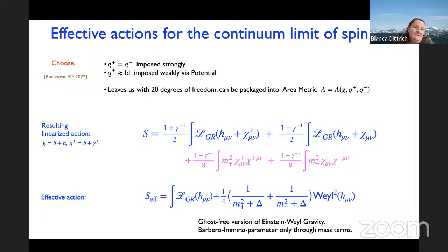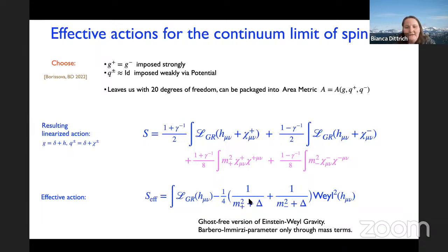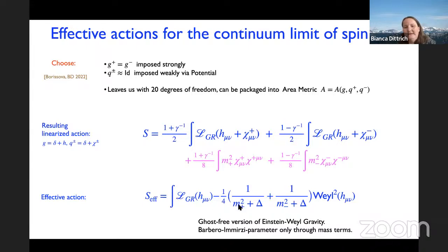What we choose is which simplicity constraints to impose sharply and which weakly. We want to reproduce the effective action from the area Regge calculus with the area metric as a free variable. So we set the two metrics to be exactly equal, but allow fluctuations of the auxiliary fields around identity. That leads exactly to an area metric. We compute the linearized action — it is very near the GR action plus mass terms from encoding the simplicity constraints in the potentials. Integrating out the auxiliary fields gives an effective action which is the linearized GR action plus a Weyl-squared term.